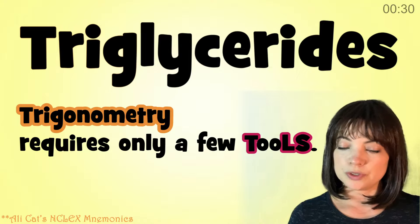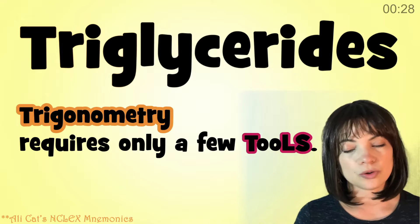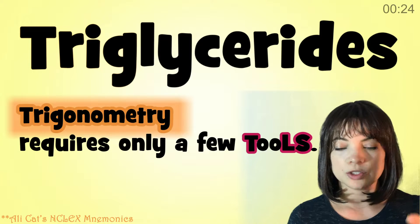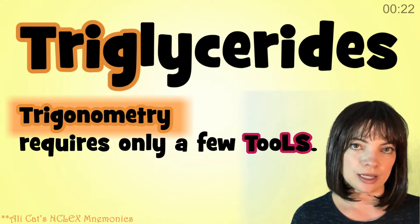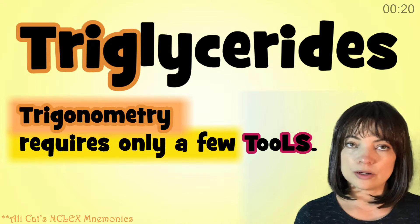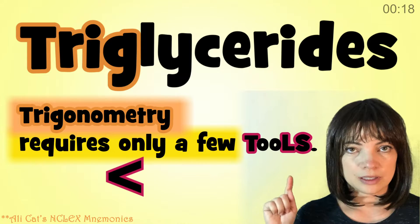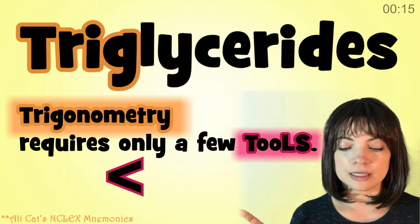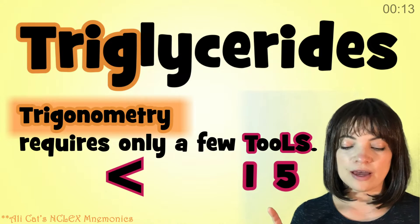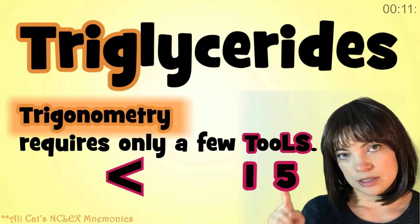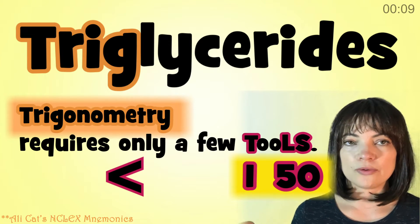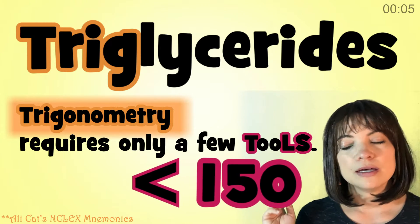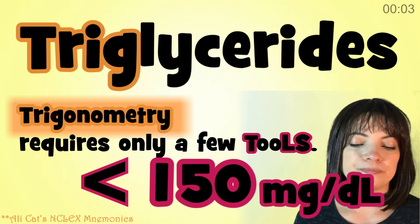Memory trick: trigonometry requires only a few tools. Trigonometry is the triglycerides, requires only a few indicates less than, tools — T is 1, L is 5, S is 0 — 150. So less than 150 milligrams per deciliter. That's it.